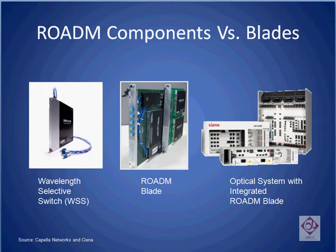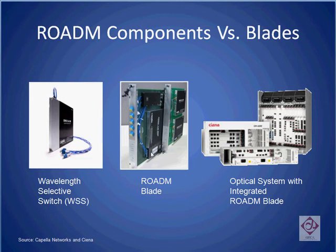There is currently a debate in the industry as to the future direction of ROADM's components versus blades. Today, most of the ROADM vendors — the component vendors — provide only the key component, the Wavelength Selective Switch. A system vendor typically takes this part and integrates it with two other main components: an amplifier and a channel monitor, and integrates that onto a single blade, which is then placed inside an optical transport or an optical switching system.